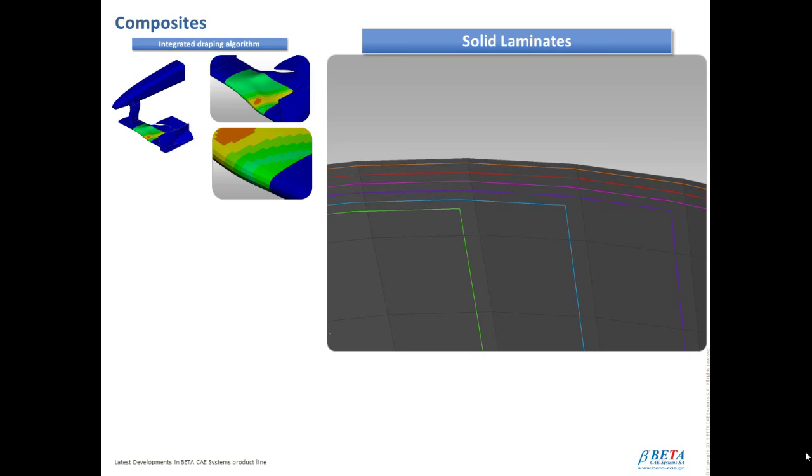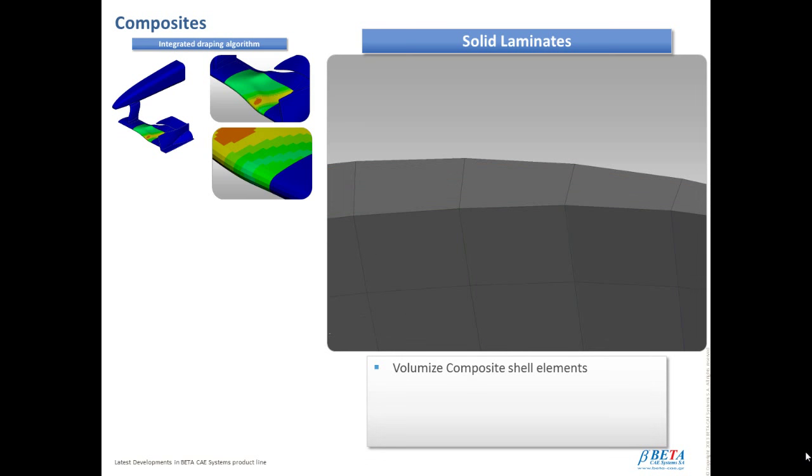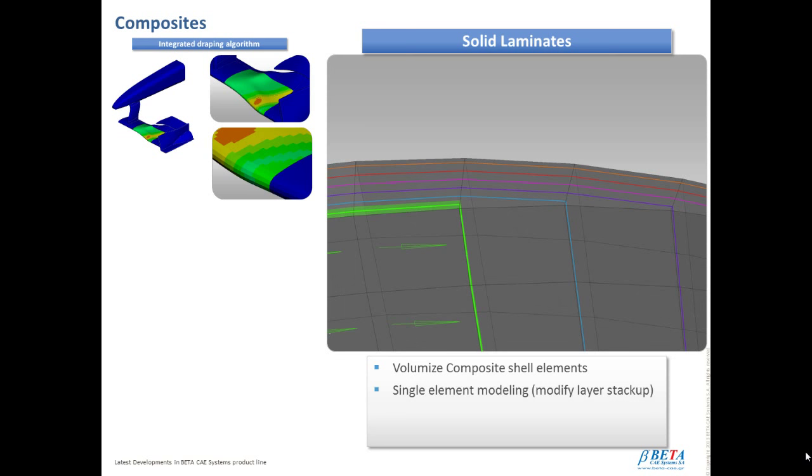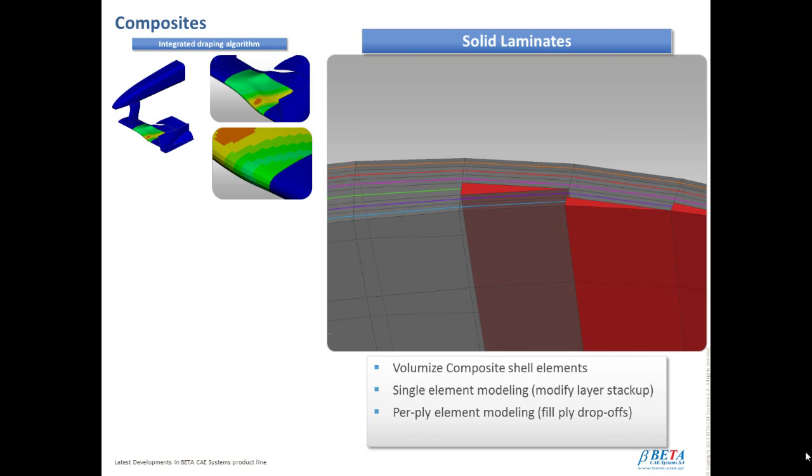Moreover, full support of solid laminate composites is now a reality for Nastran, ABAQUS, and ANSYS with their respective properties. Shell elements with composite or laminate properties can be converted to solid laminates. They can be manipulated under a laminate tool with the same manner as the shells. The conversion can be done both for single-solid element and for per-ply solid elements. And at any time, the stacking can be converted from single to per-ply and vice versa.